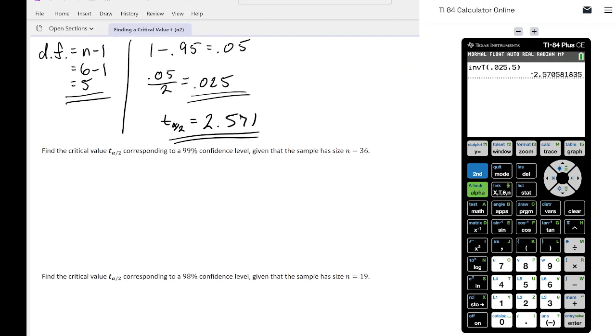How about for this one here? Find the critical value corresponding to 99% confidence level given the sample size is n equals 36. Again, the degrees of freedom, very easy to find, just 36 minus 1, that's going to give us 35. To find the area, it's going to be 1 minus 0.99, which is going to give us 0.01. And then 0.01 divided by 2 is going to give us 0.005.